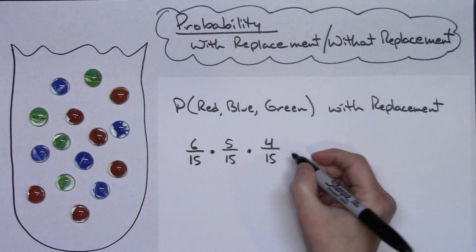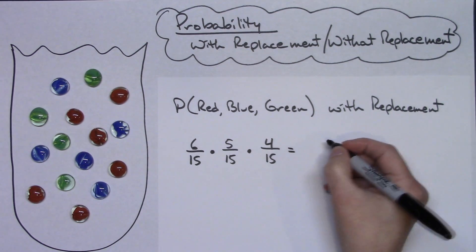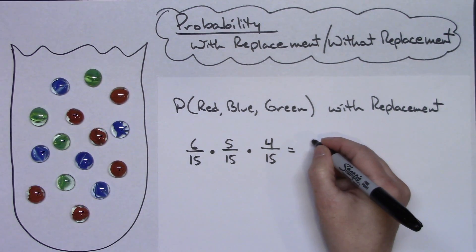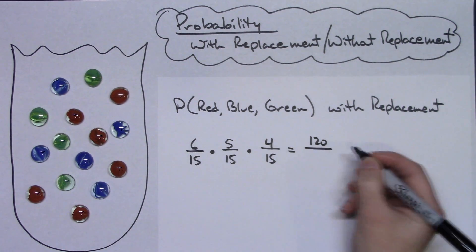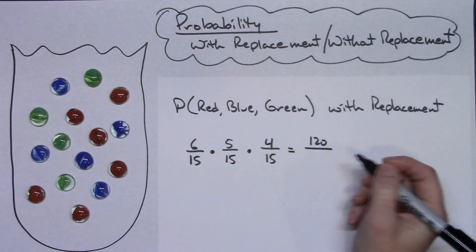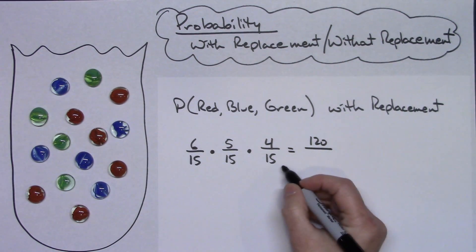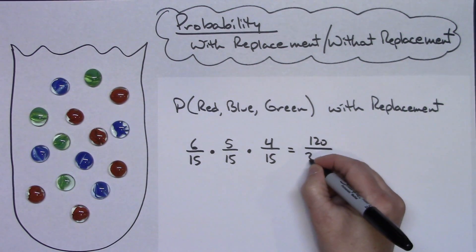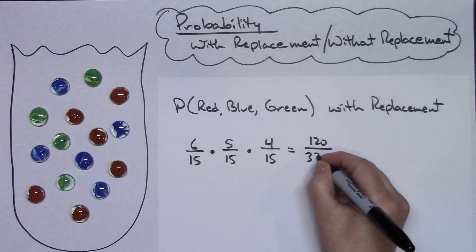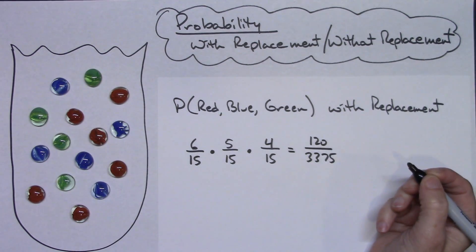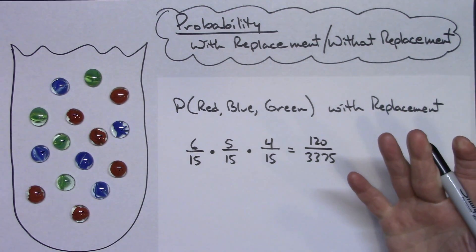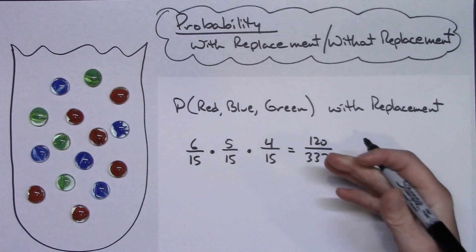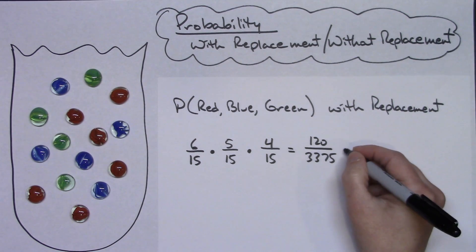Multiplying across the top you're going to get 120. If you grab a calculator, across the bottom you'll get 3,375.